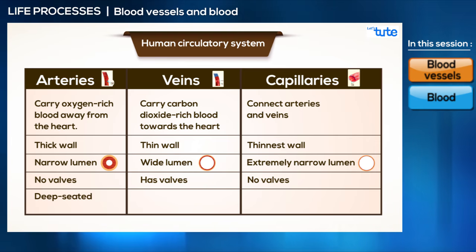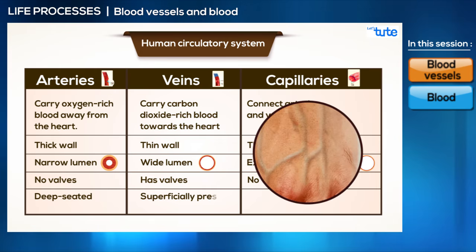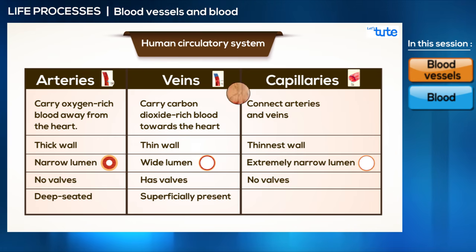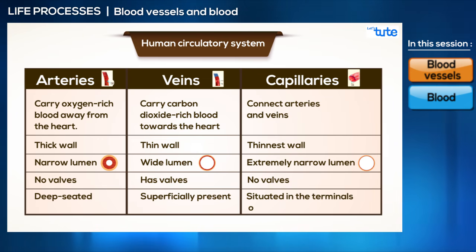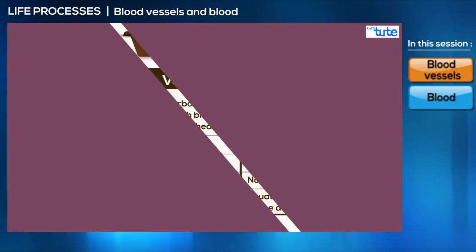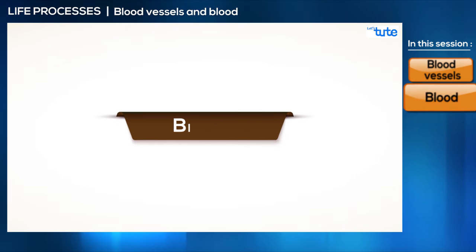Arteries are situated deep inside the body, whereas veins are superficially present. The bluish blood vessels that we see beneath our skin are the veins. Capillaries are situated at the terminals of an artery or a vein.